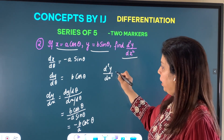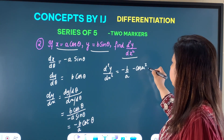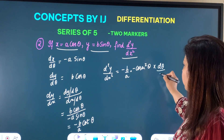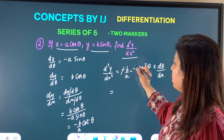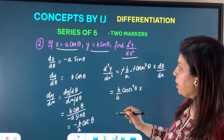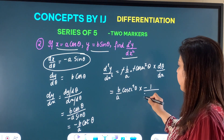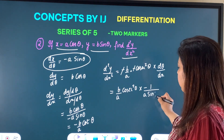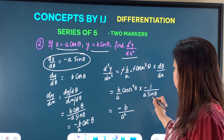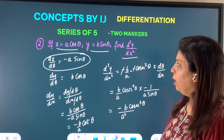Now for the second derivative d²y/dx²: starting from −(b/a) cotθ, the derivative of cotθ is −cosec²θ. Since we are differentiating with respect to x (not θ), we multiply by dθ/dx, the reciprocal of dx/dθ = −a sinθ, giving 1/(−a sinθ). The two negatives make a positive, so this becomes (b/a) cosec²θ · (1/(−a sinθ)) = −b/(a² sin³θ), which is the answer.